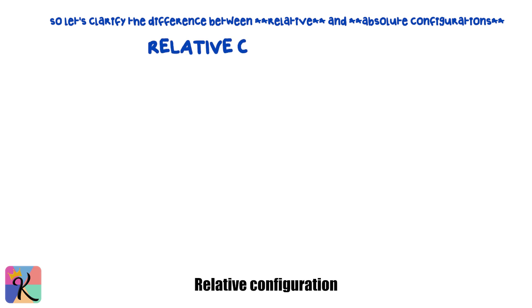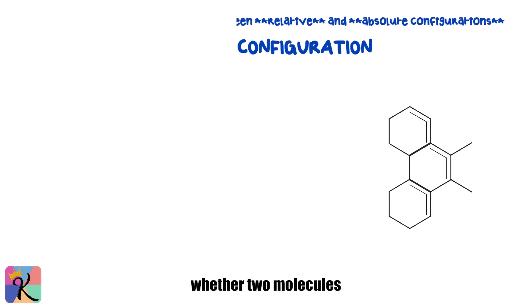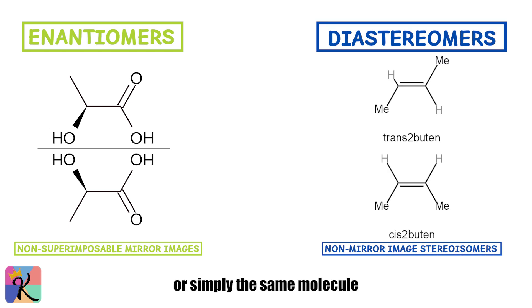Alright, so let's clarify the difference between relative and absolute configurations. Relative configuration is all about understanding how the spatial arrangement of atoms in one molecule compares to another molecule. This is often useful when you want to determine whether two molecules are enantiomers, diastereomers, or simply the same molecule.